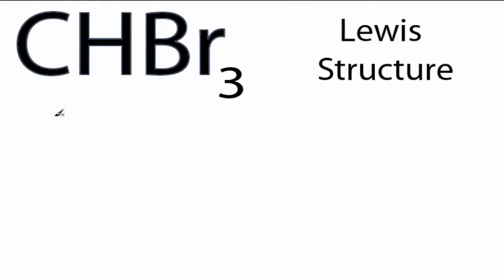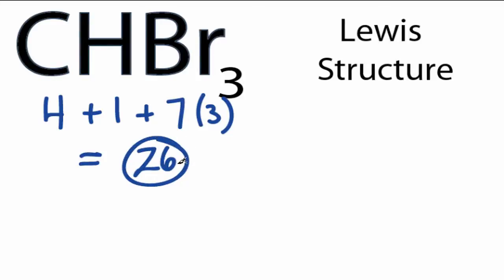For the CHBr3 Lewis structure, carbon has 4 valence electrons, hydrogen has 1, bromine has 7, but we have 3 bromines, and that gives us 26 valence electrons for the CHBr3 Lewis structure.